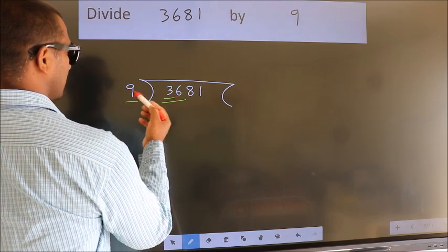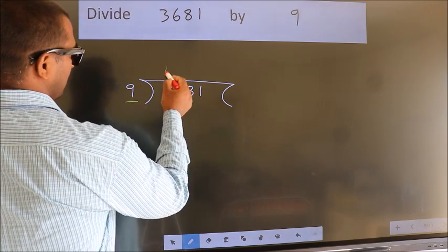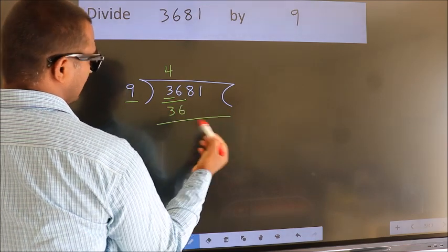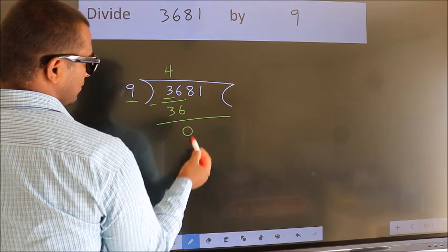When do we get 36? In the 9 table, 9 fours 36. Now we should subtract. We get 0.